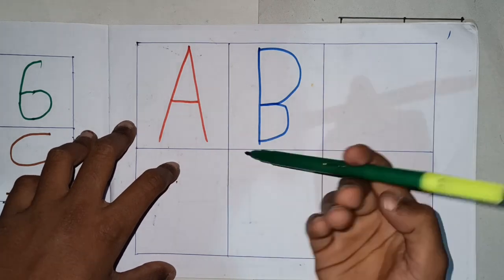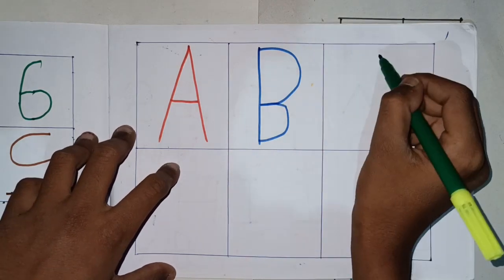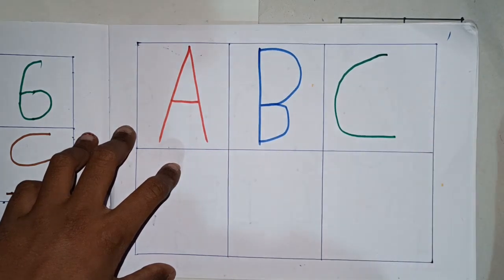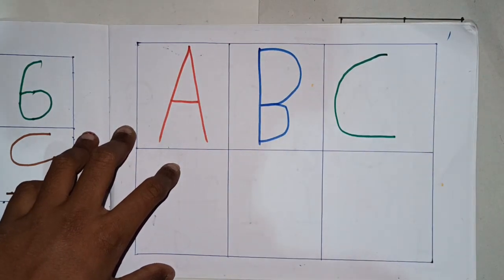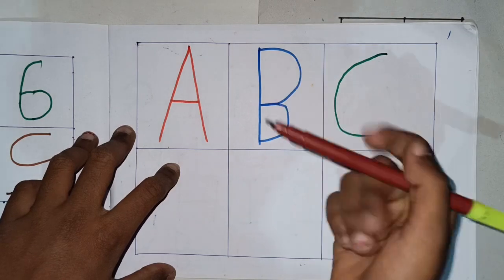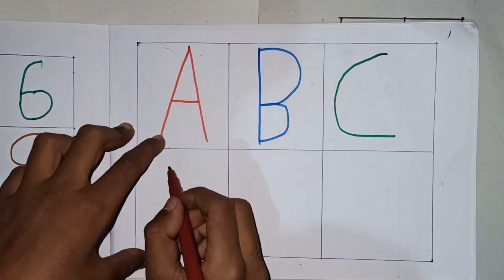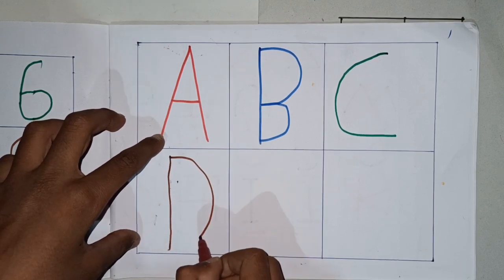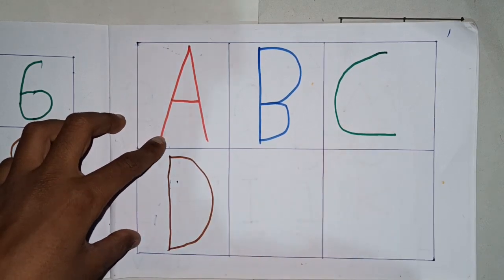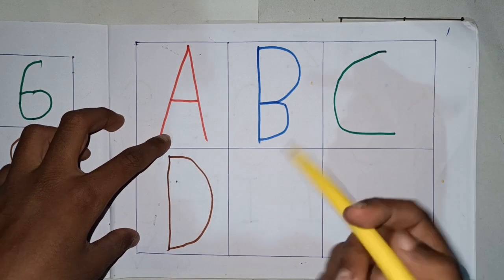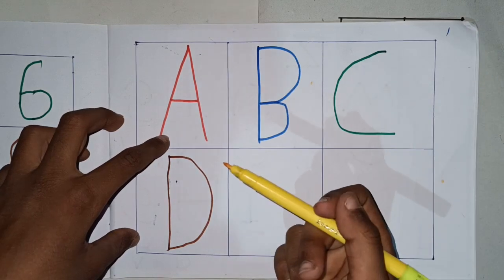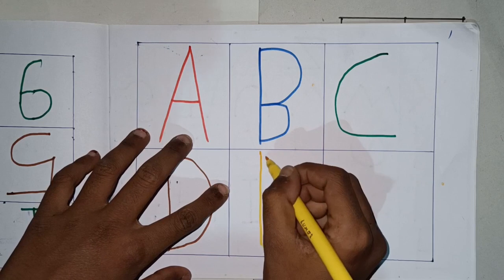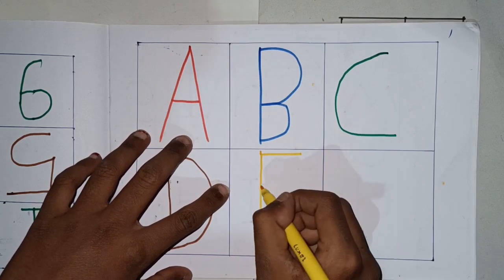Green color. C. C for Car. Brown color. D. D for Dog. Yellow color.